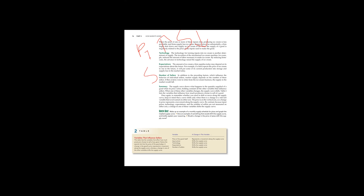The shortcut notation is PI, meaning price of input. When PI increases, supply will fall. When the price of input falls, supply will increase. The second factor is technology.